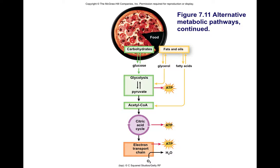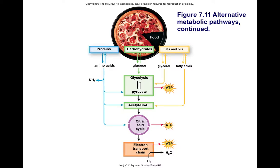Not all the energy that our cells use comes from carbohydrates. We remember our lipids — they have longer carbon chains, which result in more ATP. And of course, we have our proteins from diet too. Let's not forget them.